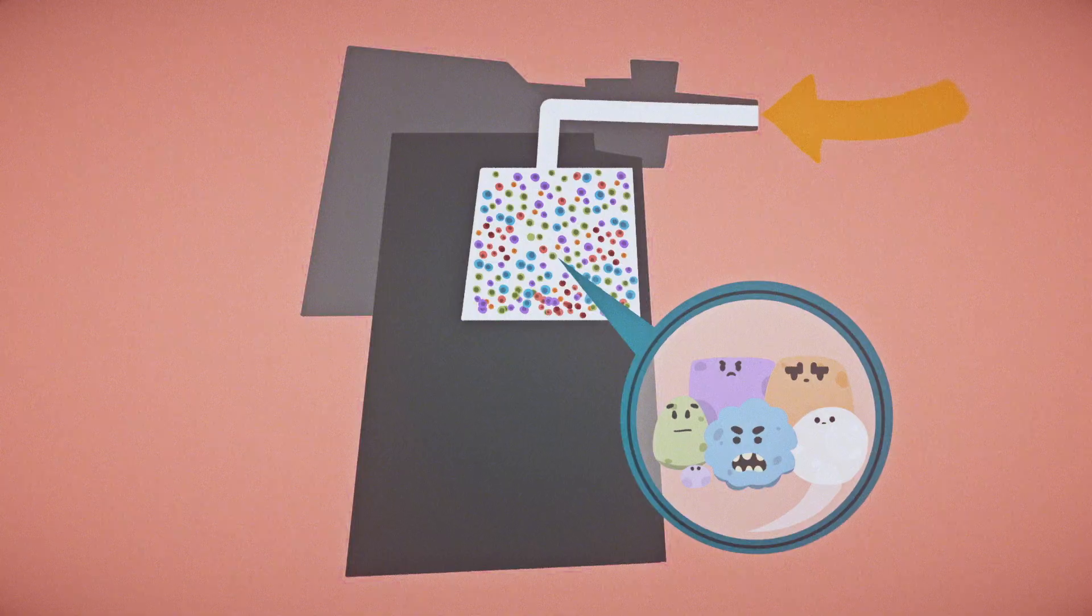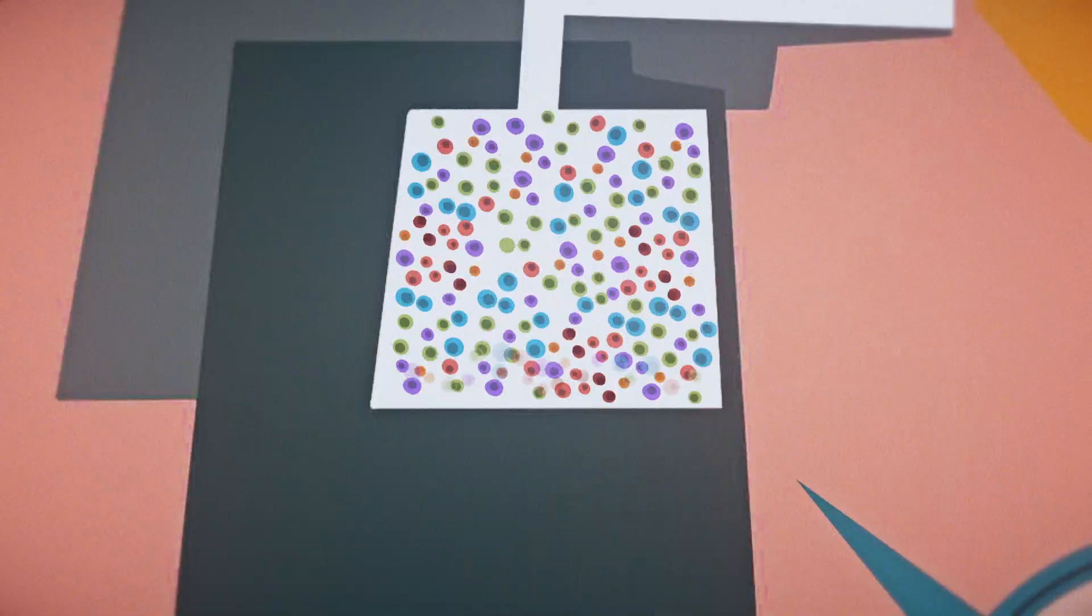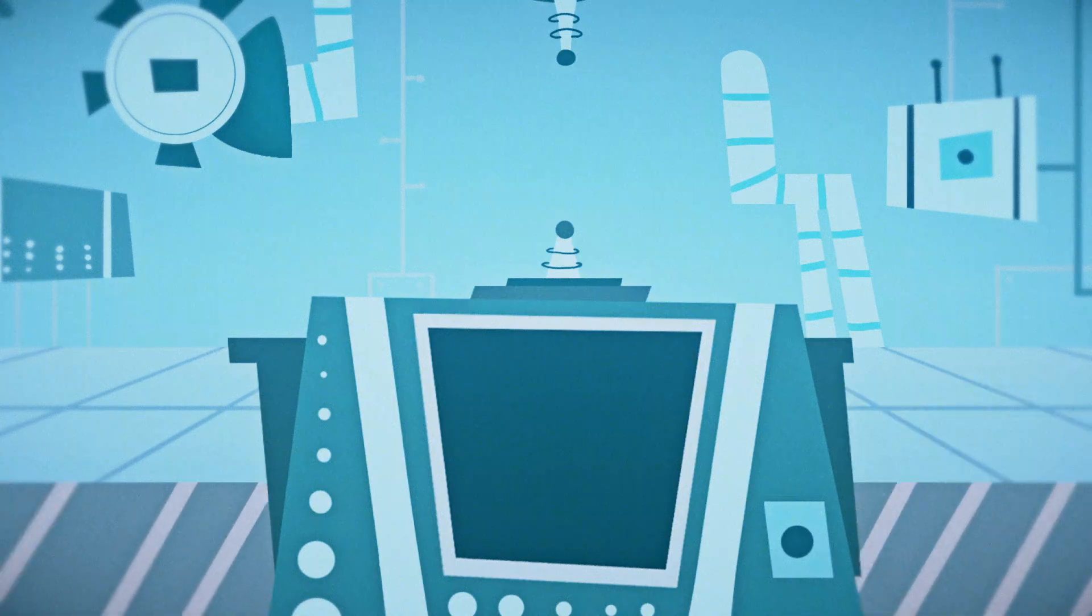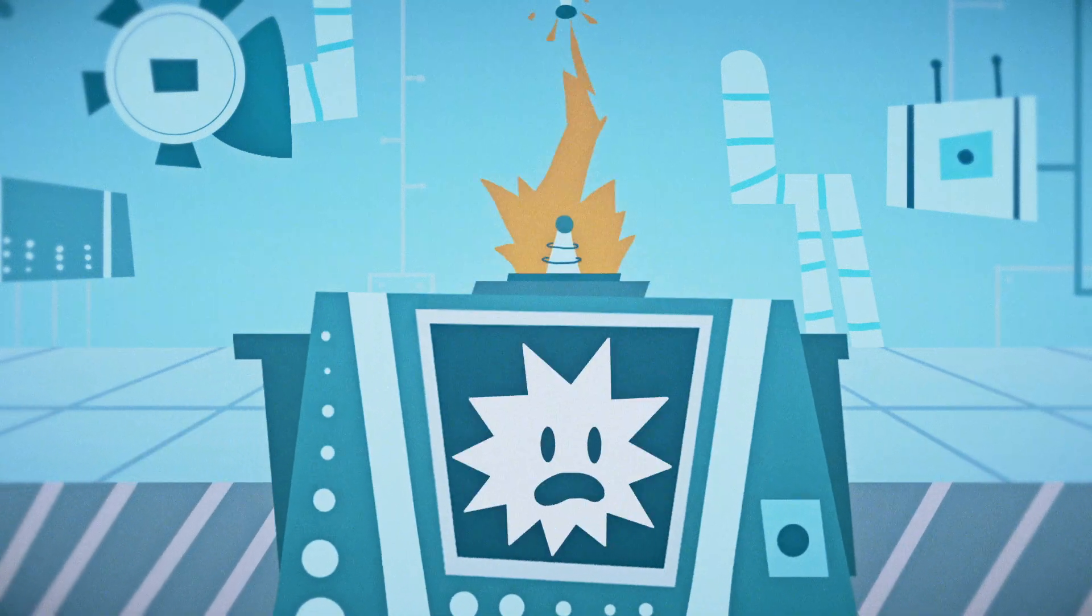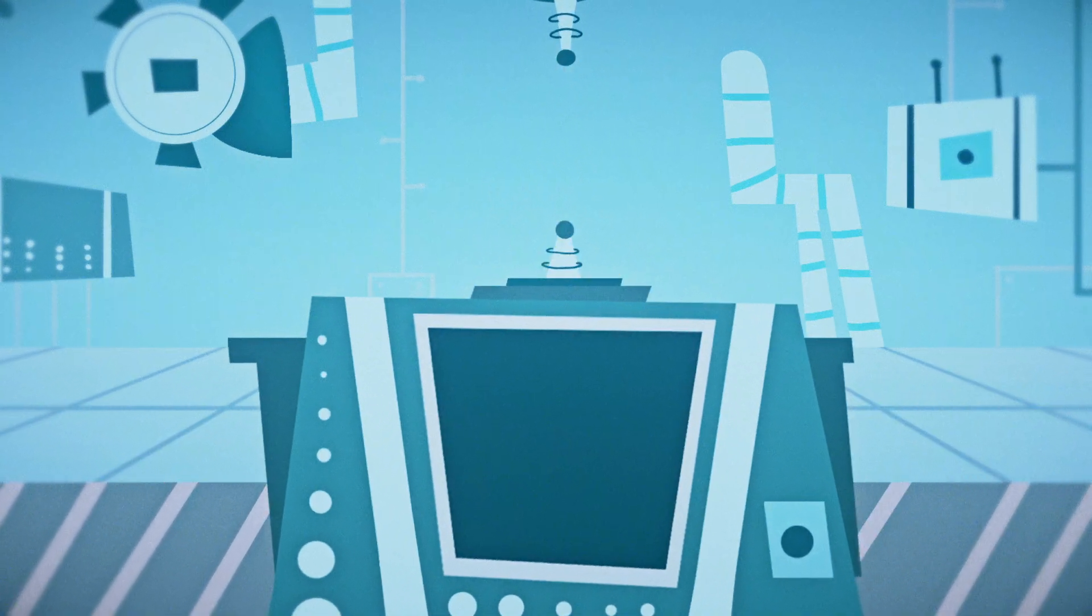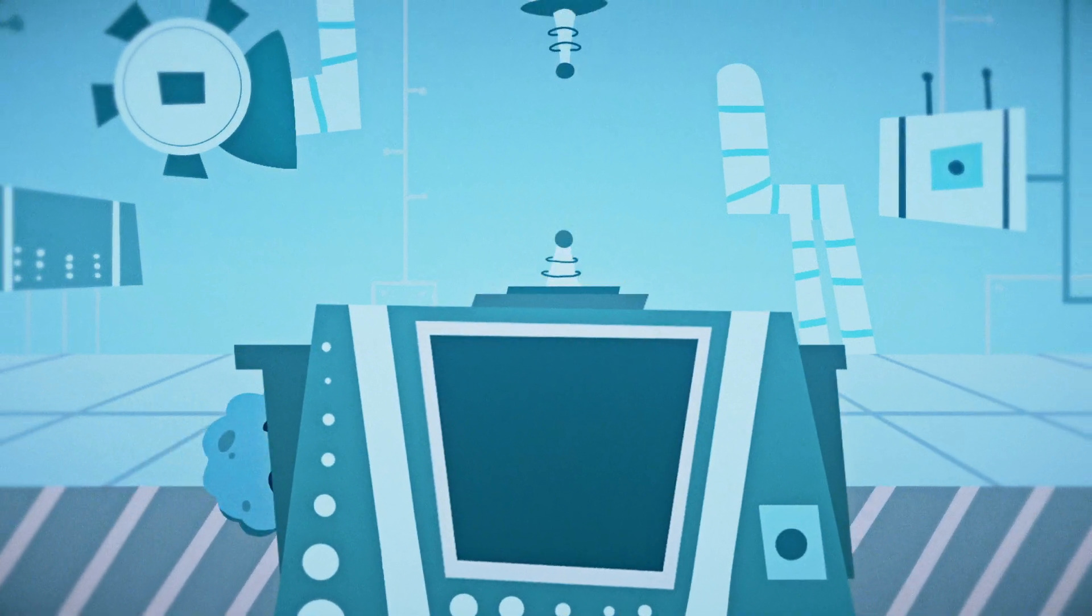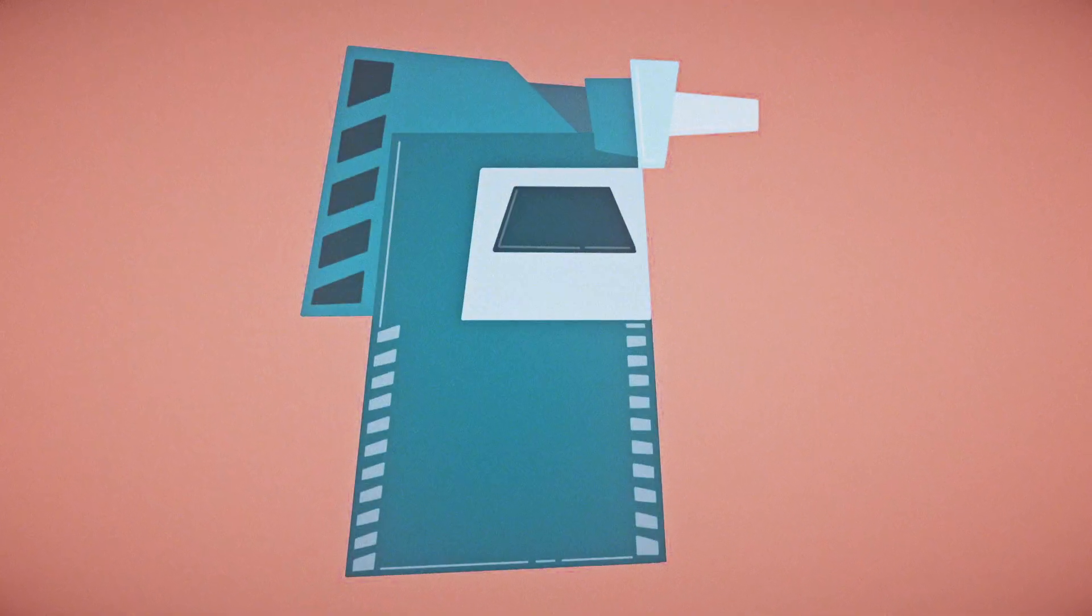When someone breathes into a breathalyzer, the ethanol in their breath passes into a reaction chamber. There, it's converted to another molecule, called acetic acid, in a special type of reactor that produces an electric current during the reaction. The strength of the current indicates the amount of ethanol in the sample of air, and, by extension, in the blood.